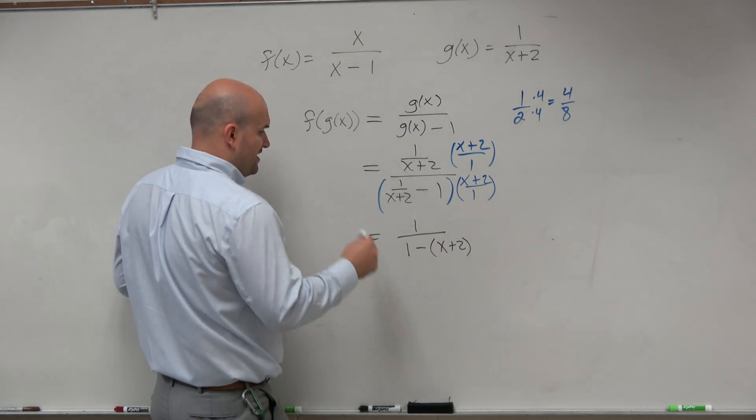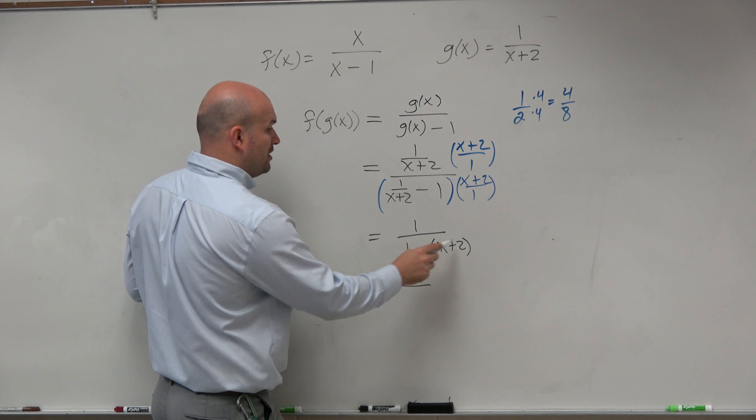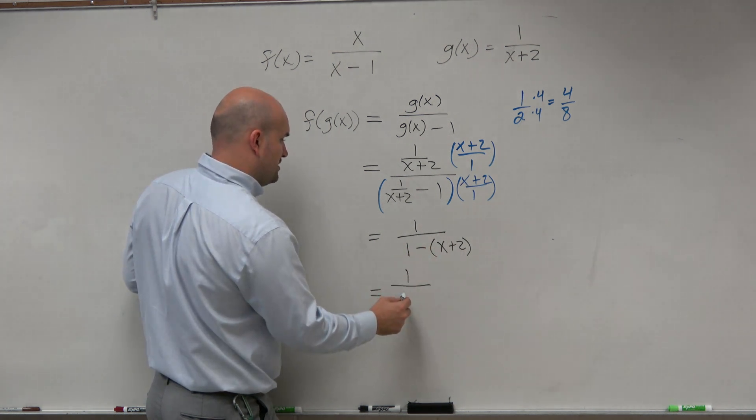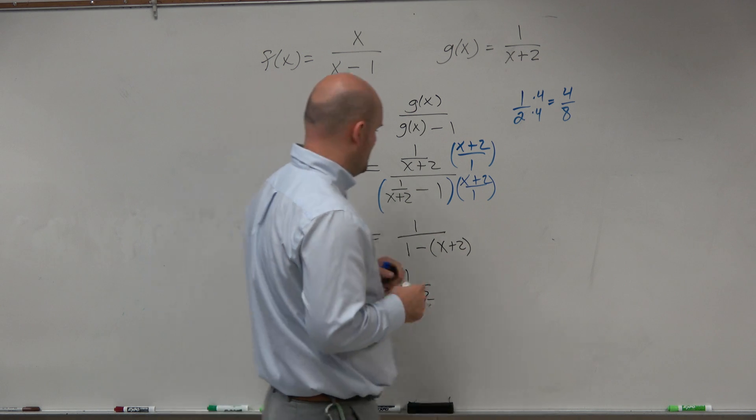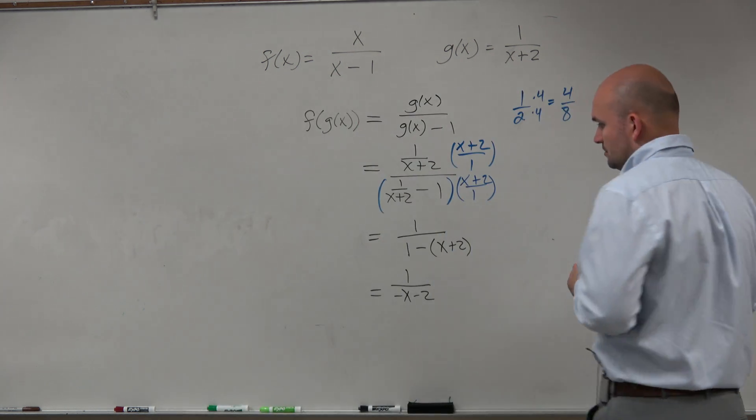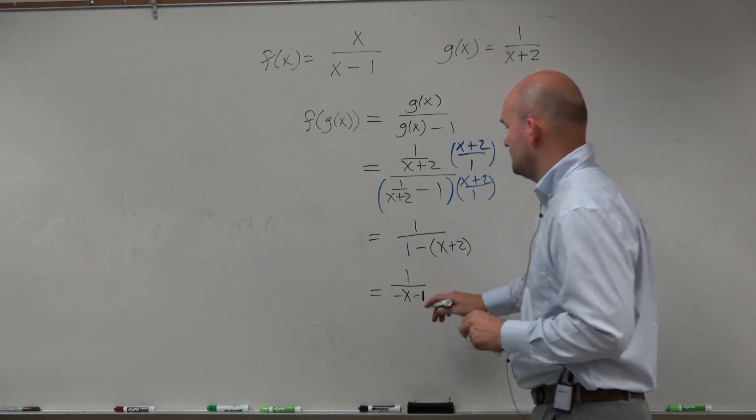Now, I can just simplify this to give me 1 over, let's see, that's going to be 1 minus 2, so that's going to be negative x minus 2. I'm sorry, negative x minus 1, right? Sorry.